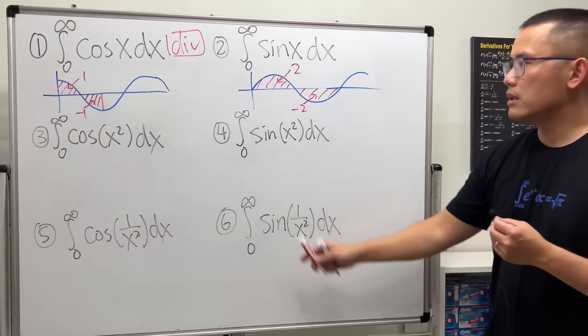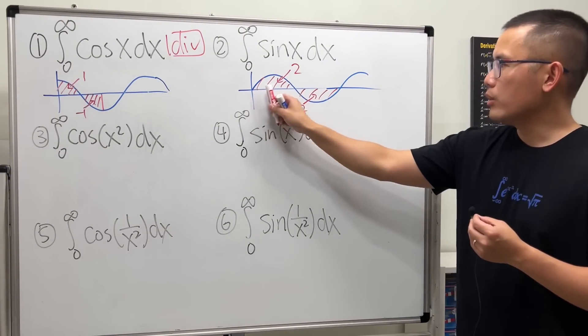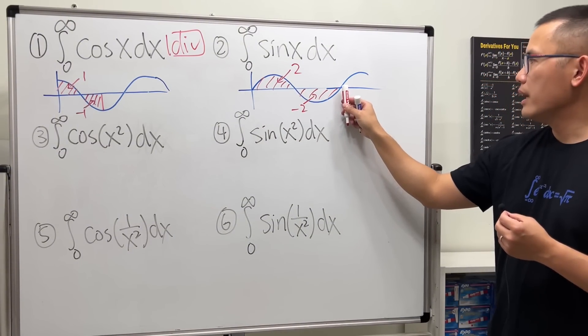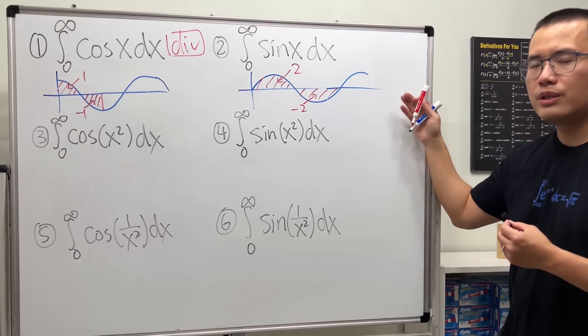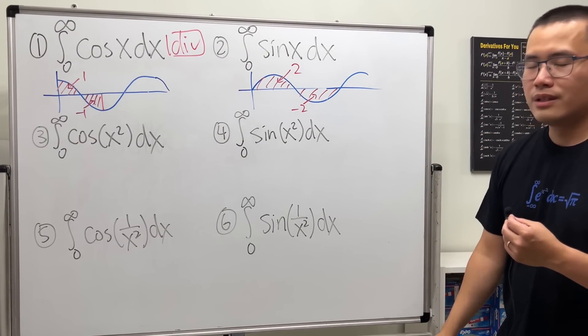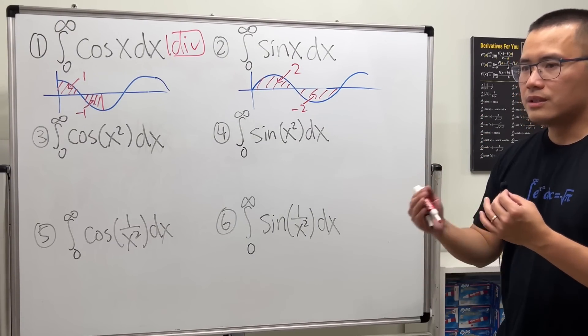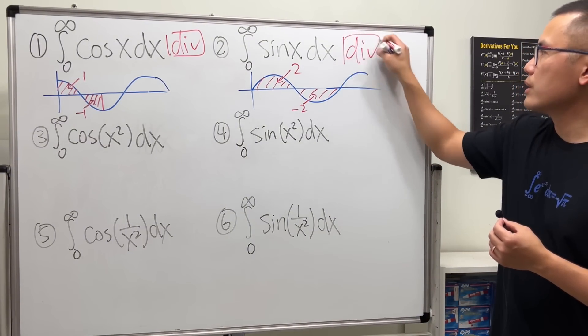So now let's keep track. From here to here is 2. From here to here is negative 2. But all the way will be 0. And then from here to here is 2, and then 0, and so on. 2, 0, 2, 0. No, it's not going to converge. There is no value that this is approaching to. Again, this right here, diverge.